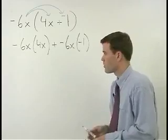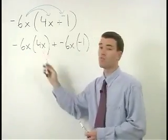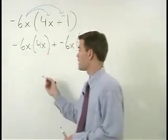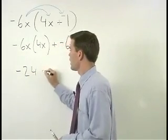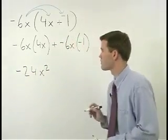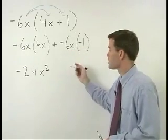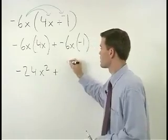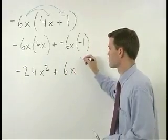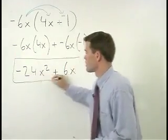Remember that negative 6x times 4x simplifies to negative 24x squared. And negative 6x times negative 1 is just positive 6x. So that's your answer.